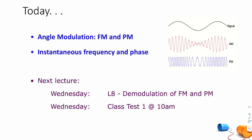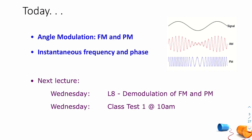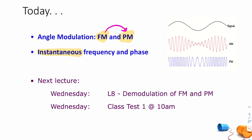Today we're going to talk about angle modulation. Rather than talking about how the amplitude of our message affects the amplitude of a high-frequency carrier, we're going to have the frequency of the high-frequency carrier modulated by your signal. Your signal amplitude will modulate the frequency or the phase of the carrier. We're going to learn how frequency and phase are closely related — one is the derivative of the other — and we'll introduce the idea of instantaneous frequency and phase.